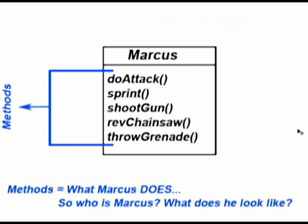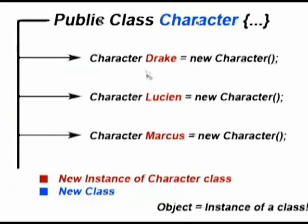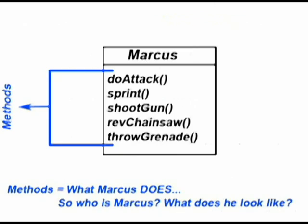However, whenever you generate a new object, how do you tell if they're different? If you're just creating new objects and they're all the same, what's the point? Obviously, we need to make them different.